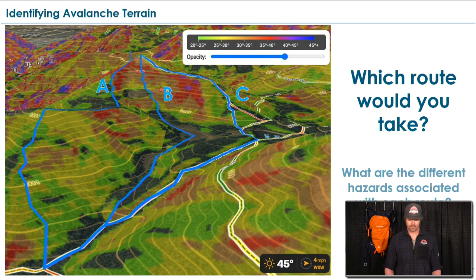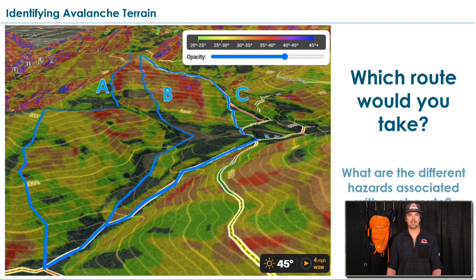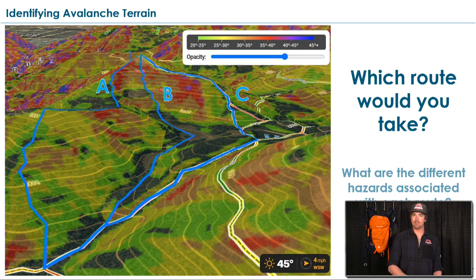Route C avoids being in any kind of gully — you gain a ridge line that's low angle and then get to your objective safely. I might pick route C if I'm trying to get to the top of this peak, but I also want a couple of different options in case something goes wrong. Maybe plan A would be C, and route A would be my backup plan in case anything comes up in the field that I'm not expecting.